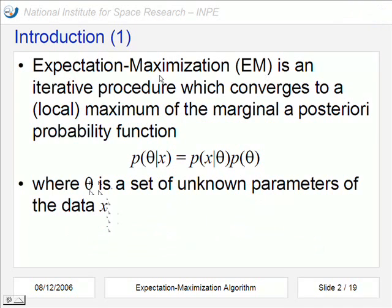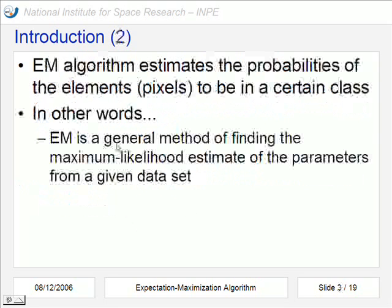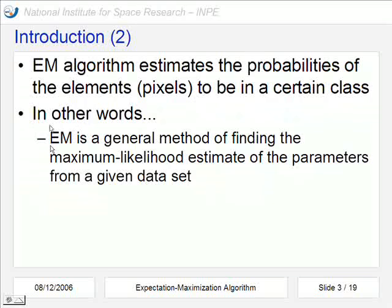EM is an iterative procedure which converges to a local maximum of the marginal posteriori probability function. It tries to estimate the probability of a certain theta, where theta is a set of unknown parameters considering the data x. This algorithm estimates the probabilities of the elements, in our case pixels, to be in a certain class.